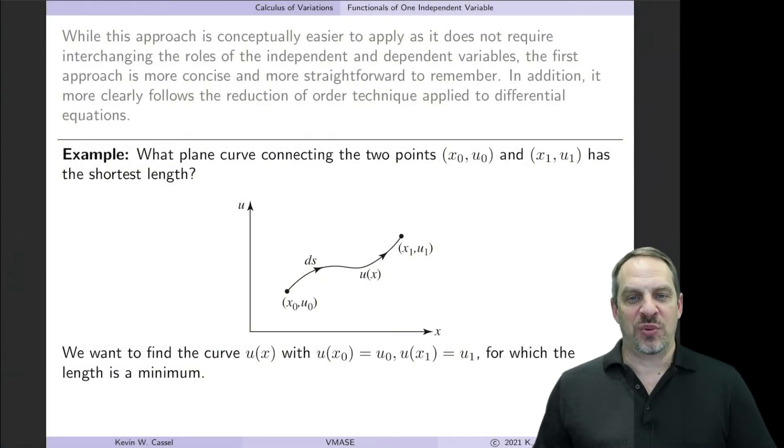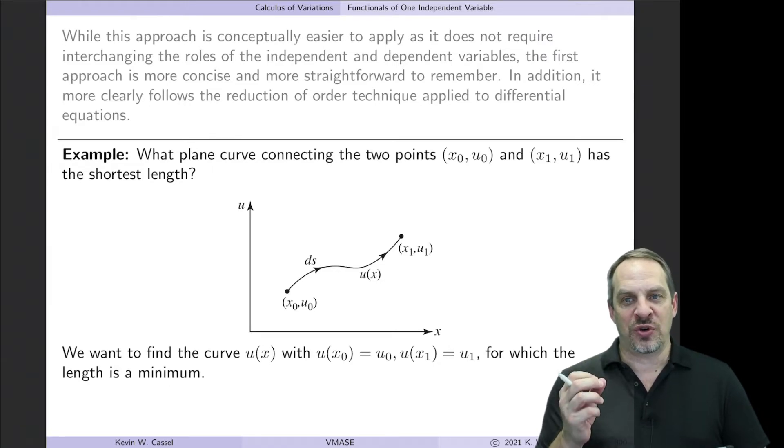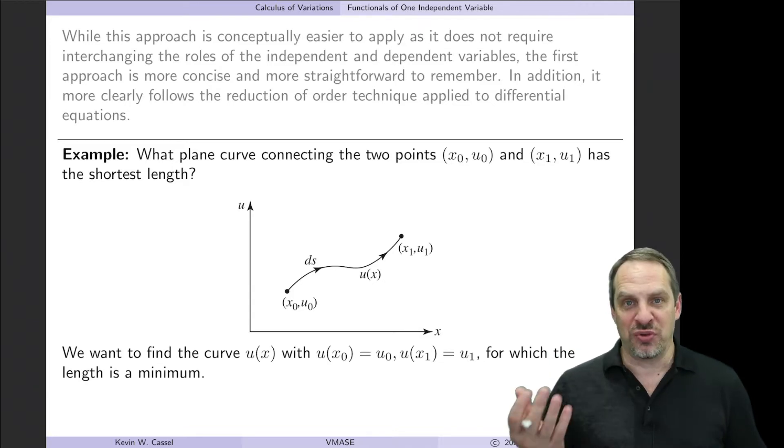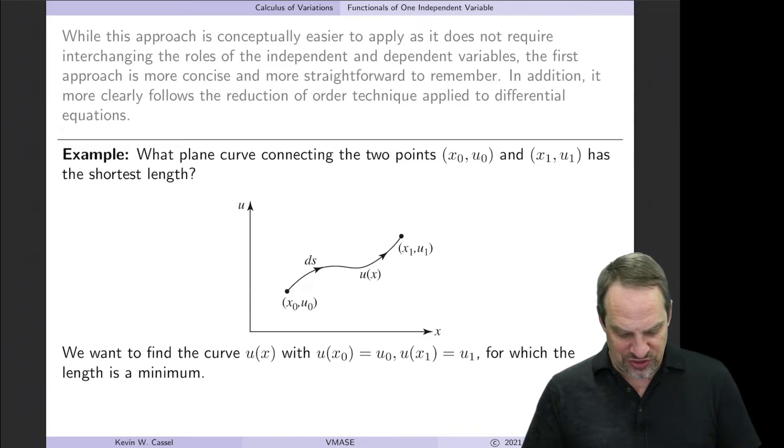In this video we're going to do another example, and we're going to prove something that intuitively you know is true, but you've probably never seen a proof of. The reason why you haven't seen a proof is because you need variational methods to prove it. What we're going to show is that indeed the shortest distance between two points is a straight line. I'm going to actually prove that using variational techniques.